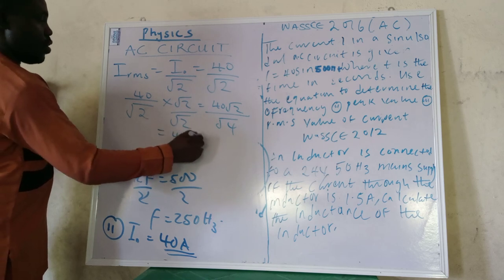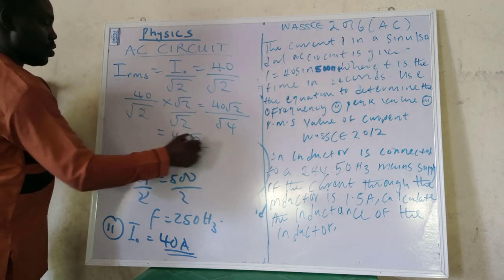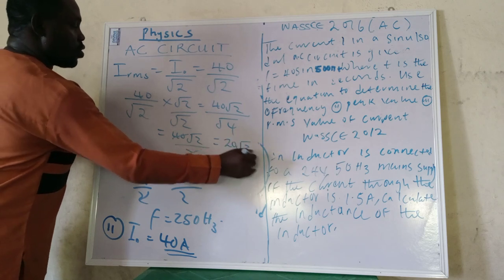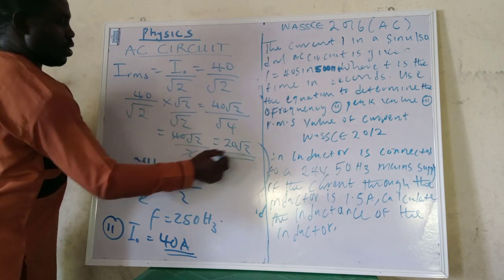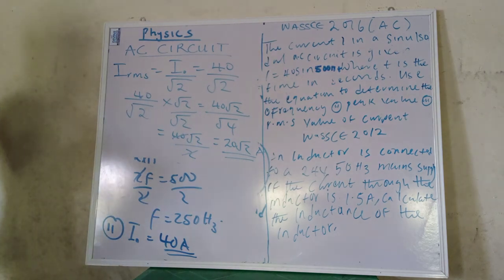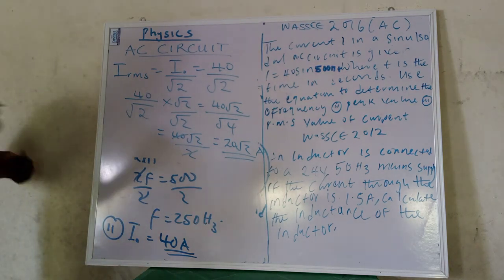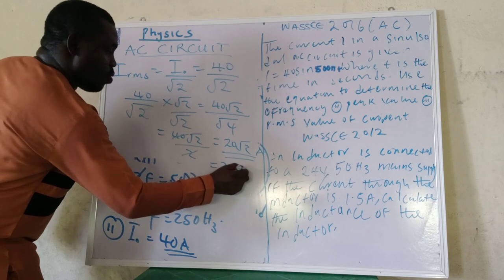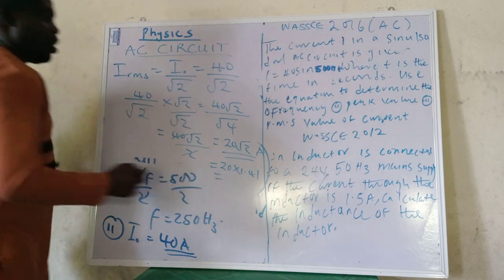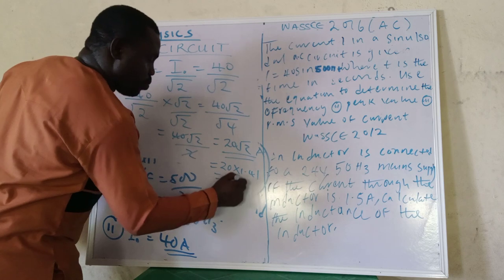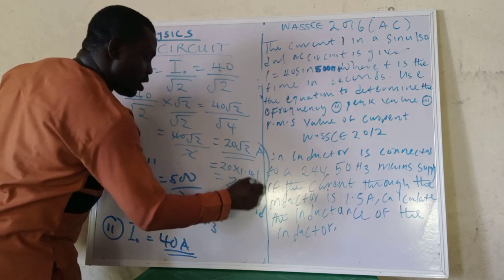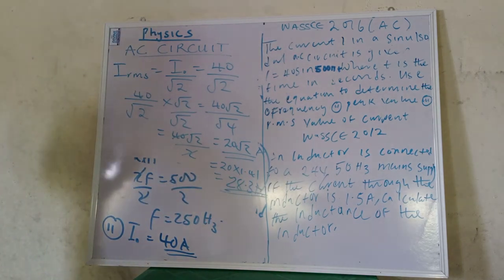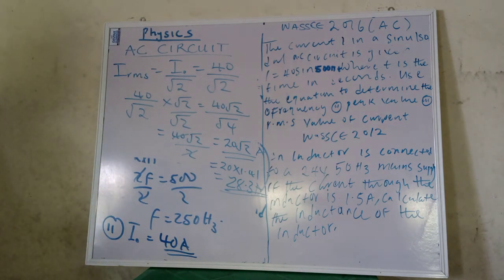So for our friends who may be wondering, we can just rationalize. So we have 40 over root 2 equals 40 root 2 over 2 equals 20 root 2 amperes. And then you could also say that 20 times 1.41 equals 28.3 amperes, and that's the final answer. So you can write it as you like in the question.